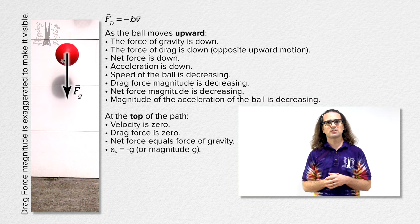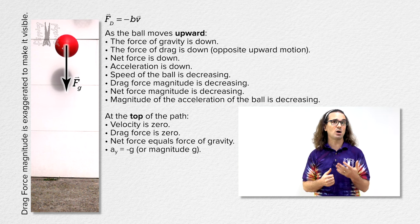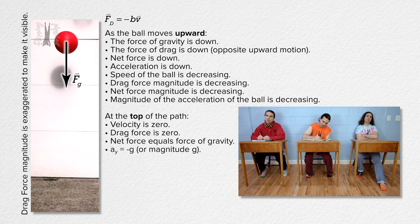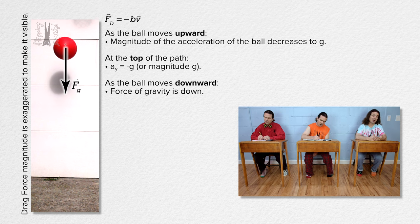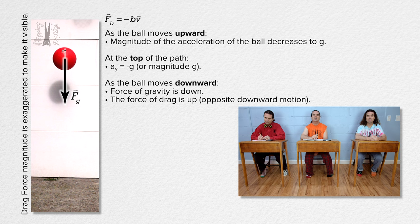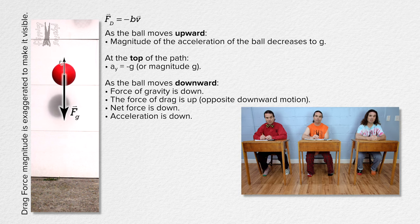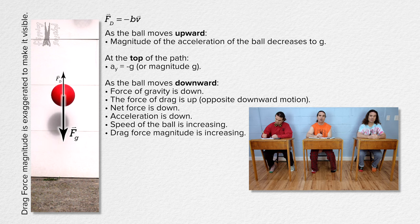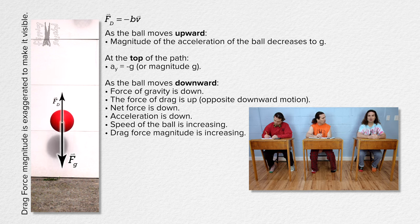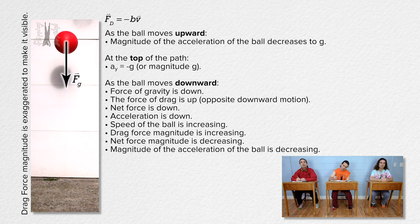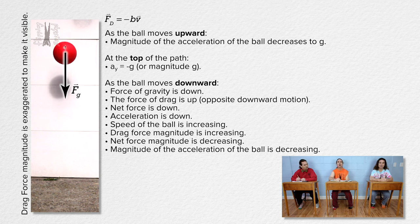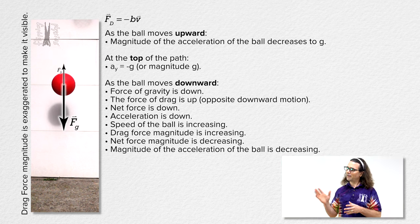As the ball moves downward, the force of gravity is still down; however, the force of drag is now up. That means as the ball moves downward, the net force is down, so its speed increases, causing its drag force to increase. However, the magnitude of the net force on the ball decreases, and therefore the magnitude of the acceleration also decreases. So on the way up, the magnitude of the acceleration decreases to g, and on the way down, the magnitude of the acceleration continues to decrease.